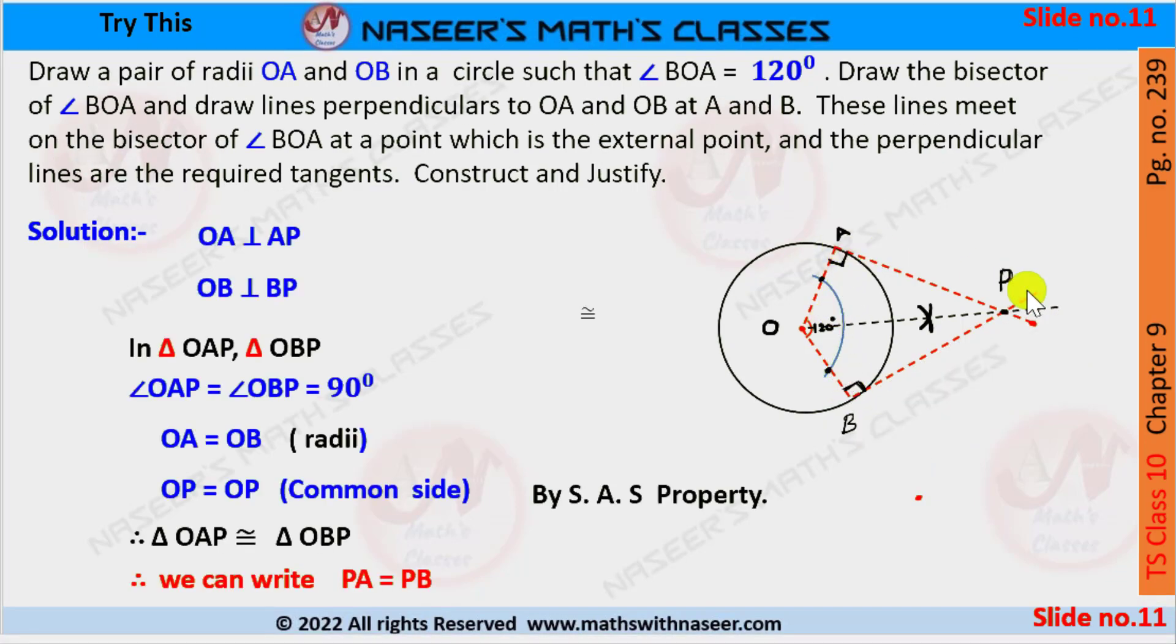To justify our answer, we must prove that AP and BP are tangents drawn from an external point and are equal. From the construction, we know that OA is perpendicular to AP and OB is perpendicular to BP.